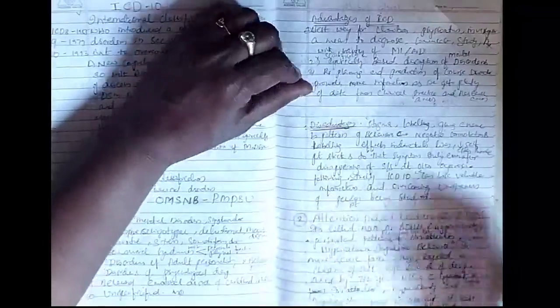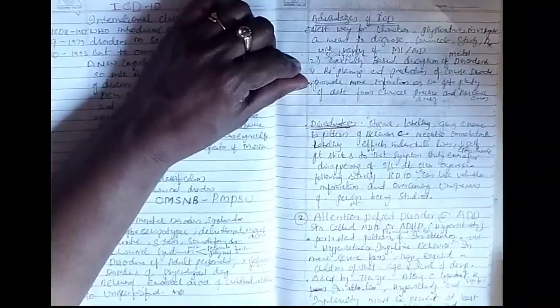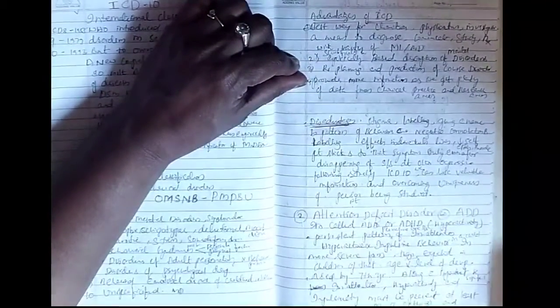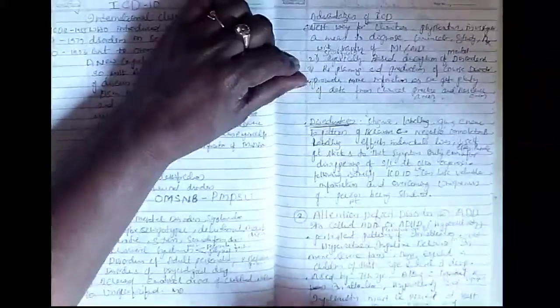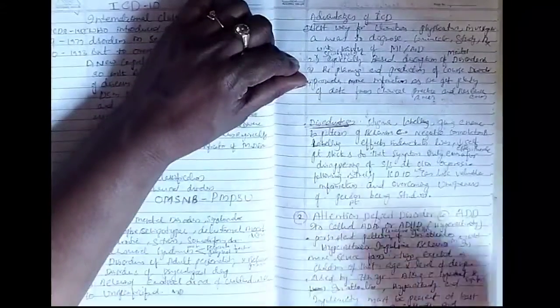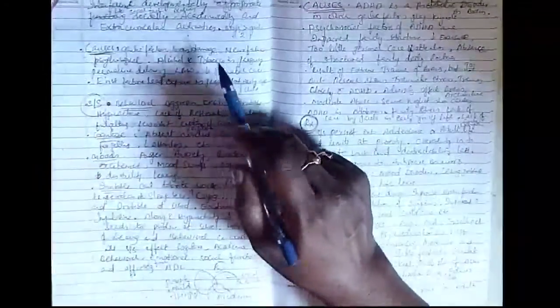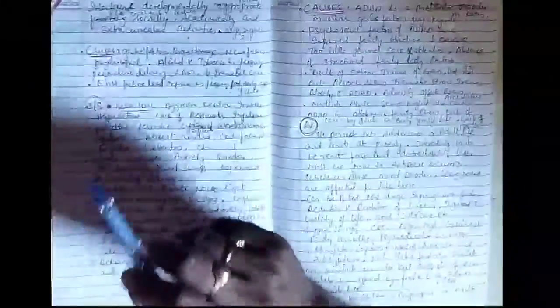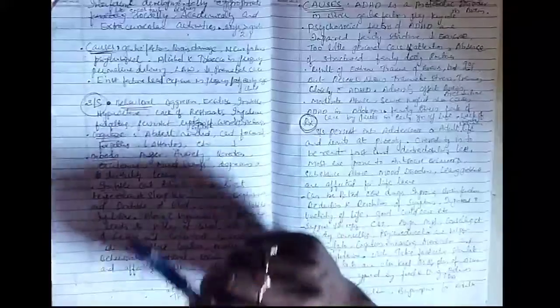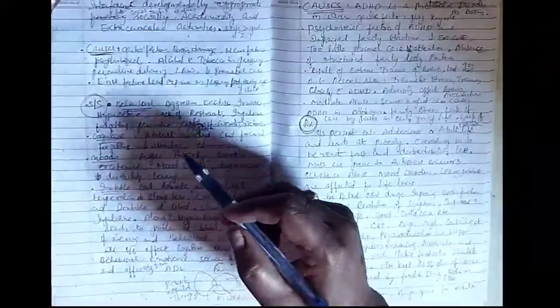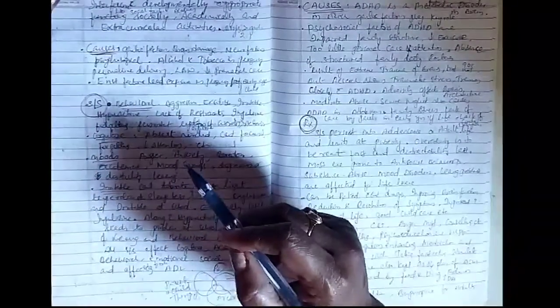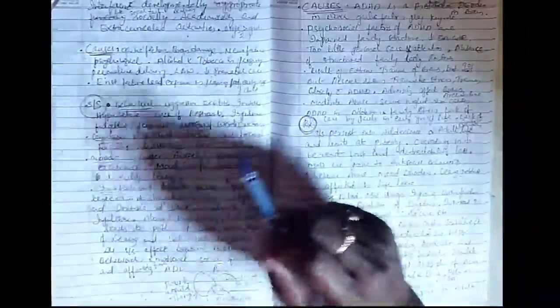This is usually diagnosed by the age of seven years and along with significant levels of inattention, we need to have hyperactivity and impulsivity in at least two settings. There should be interference with developmentally appropriate activities or functions like social functions, academics and extracurricular activities at the school levels. It is more common in boys than girls, ratio is two to one.